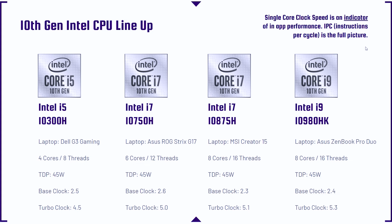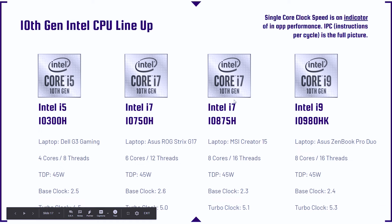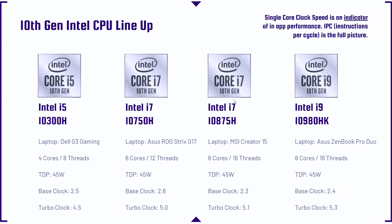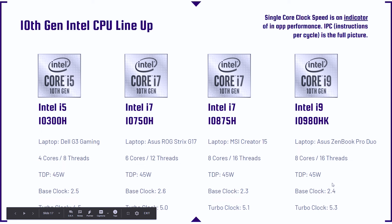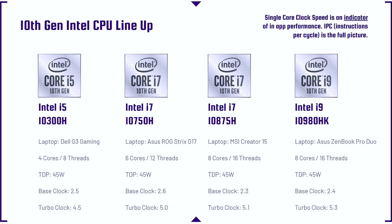For the Intel 10th gen lineup, single core clock speed is an indicator of in-app performance — not gospel truth, but an indicator. Followed by IPC, instructions per cycle, which gives you the full picture. Unfortunately, brands don't give us IPC because it would be a very obvious indicator of who is better. IPC measures how many instructions a processor can make per cycle — for example, within a 2.4 GHz cycle. That's an even better indicator but requires running your own tests.